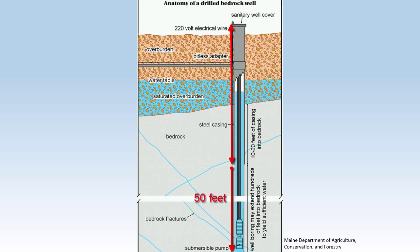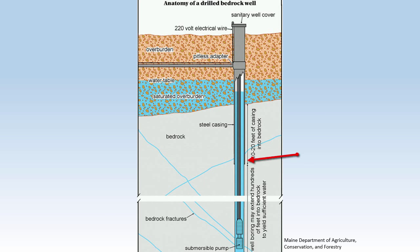This could be 50 feet, or it could be 1,000 feet. Because bedrock is solid, it acts as the well casing below the seating of the surface casing. The borehole intercepts fractures in the bedrock, which provide water to the well when it is pumped.